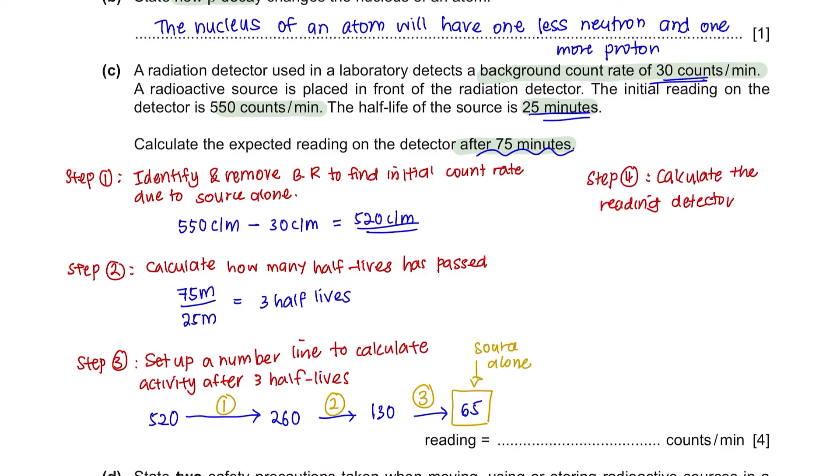But the detector will not only show you the radiation from the source, it will also include the background radiation. So the reading on the detector that you will see is 65 counts per minute from the source alone together with 30 counts per minute which is the background radiation. The reading on your detector is 95 counts per minute.